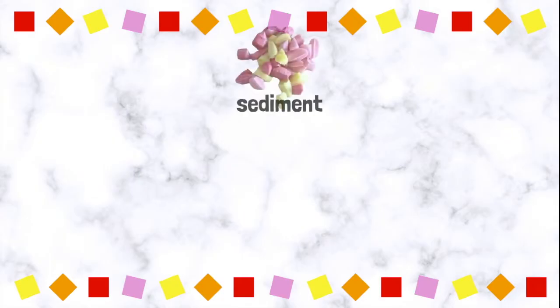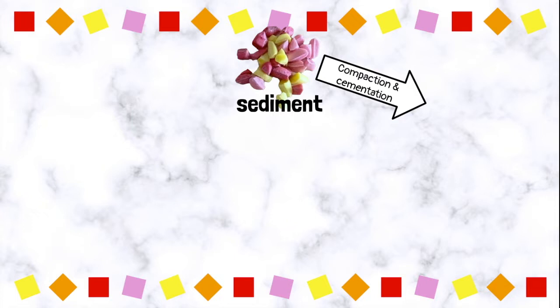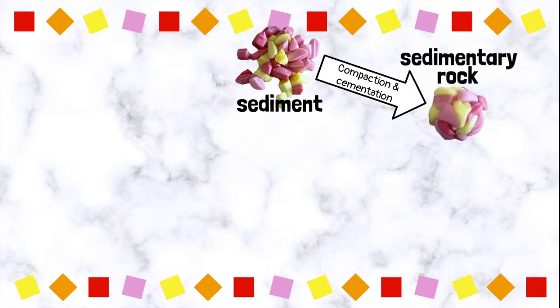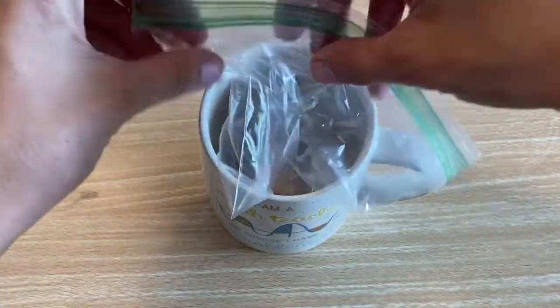So, we started with sediment, which was then compacted and cemented together to make a sedimentary rock. What if that rock is buried deep underground where it's melted from the heat of Earth's core? Then it becomes magma.